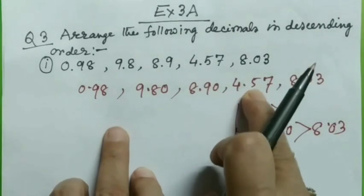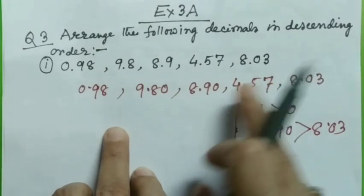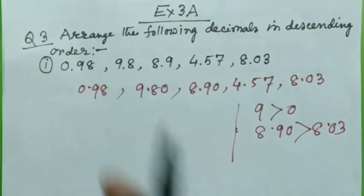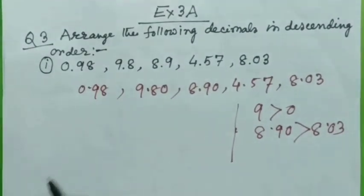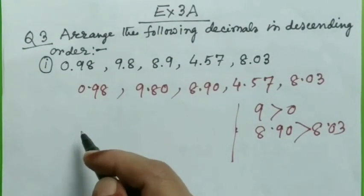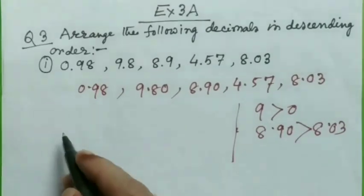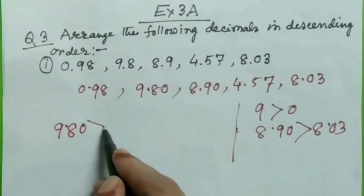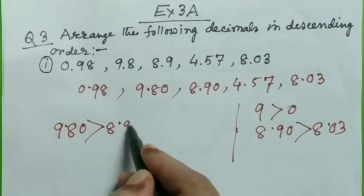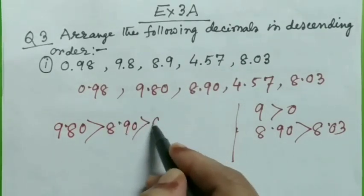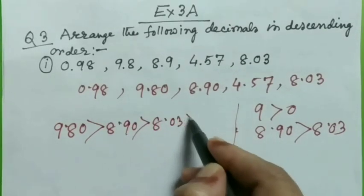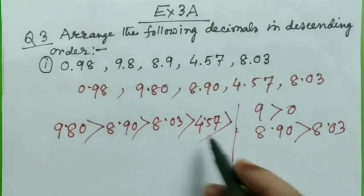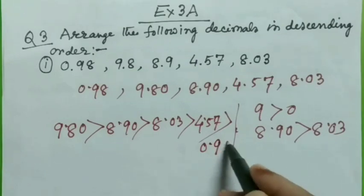And next one will be 4.57 obviously because 4 is less than 8. And next one will be 0. So next, the descending order will be like this: 9.80 is greater than 8.90 is greater than 8.03. Next one is 4.57, and last one is our 0.98.